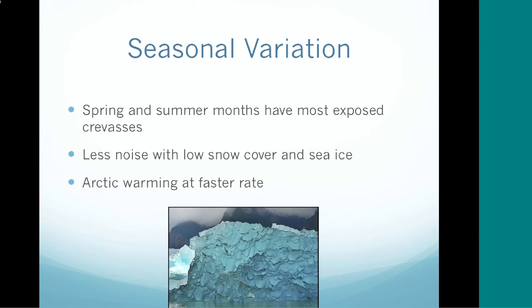One thing to take into account when picking our pairs for pixel tracking are the seasonal variations. In order for this process to work, we need distinct features. In the winter, these ice caps are covered in ice and snow, and snow looks very uniform. There's also a lot of sea ice extent, which also looks very uniform, so it's hard for our program to pick something distinct to find a velocity. If we tried this process in the winter, it would try to focus on snow, which is not distinct at all, and we'd obtain something called noise — just not coherent data sets.